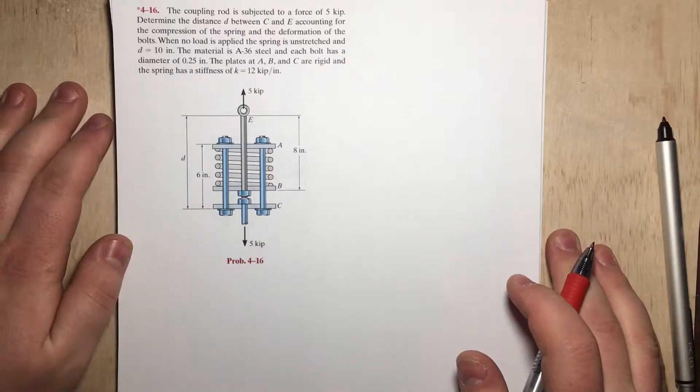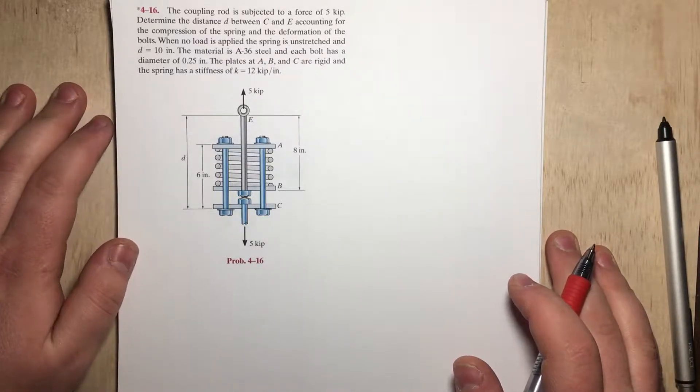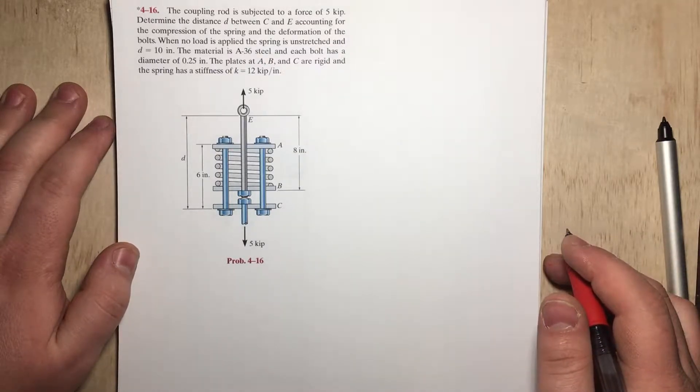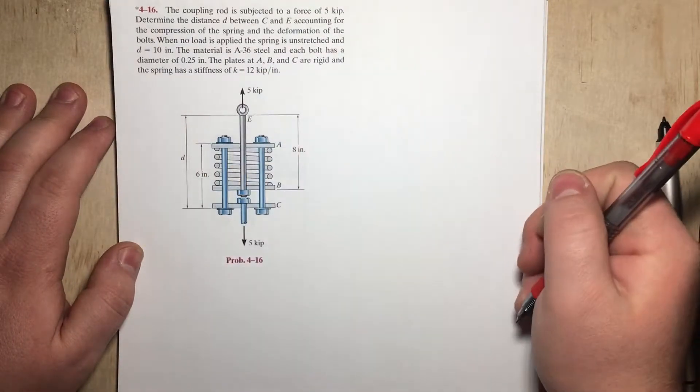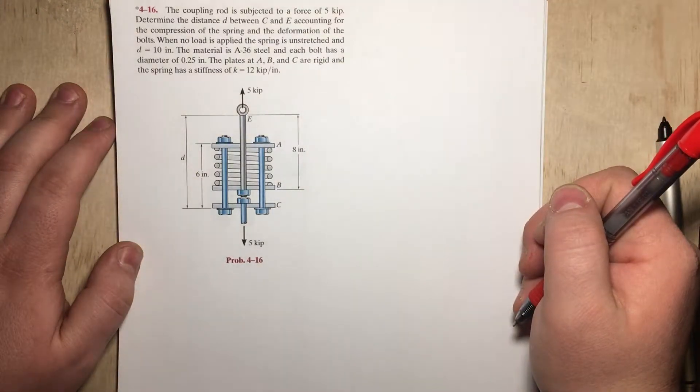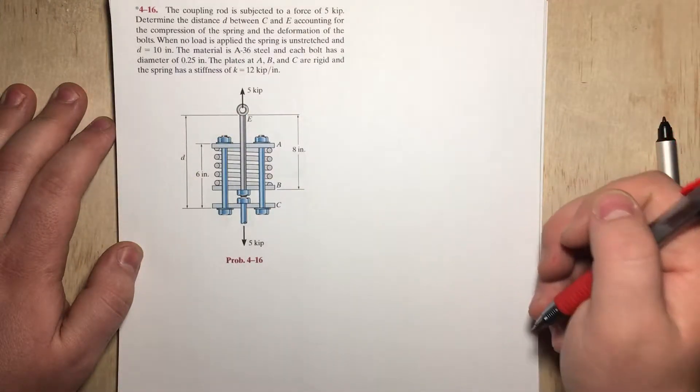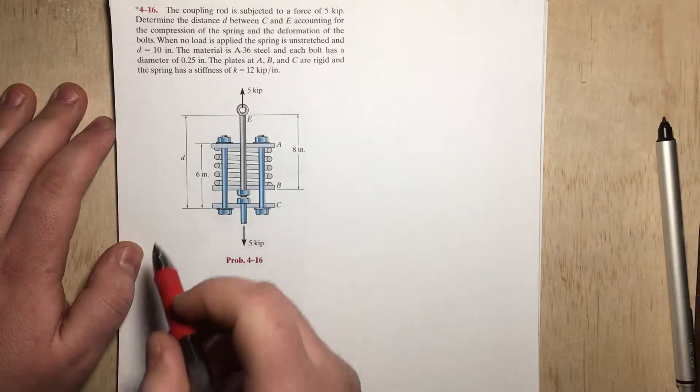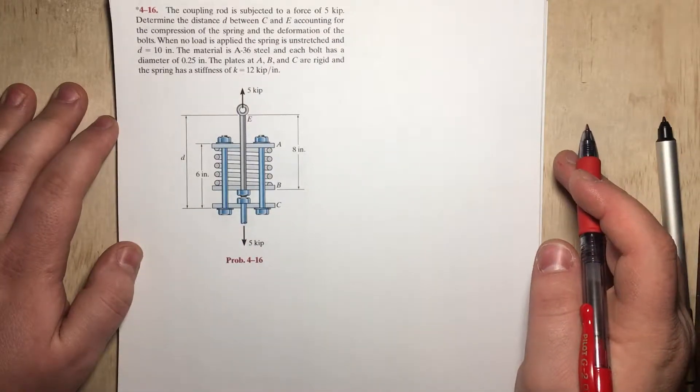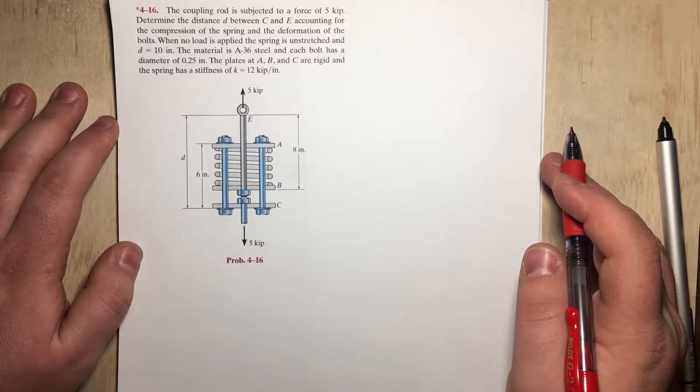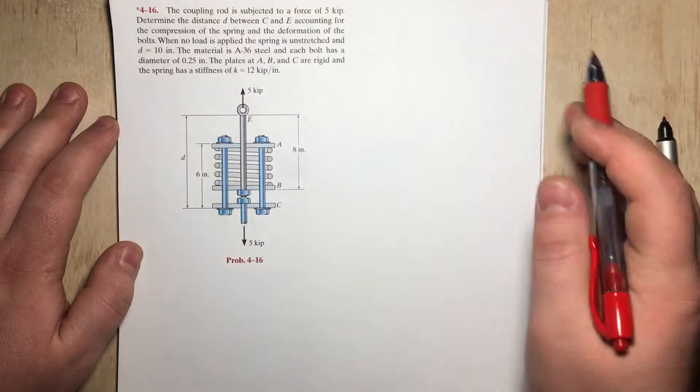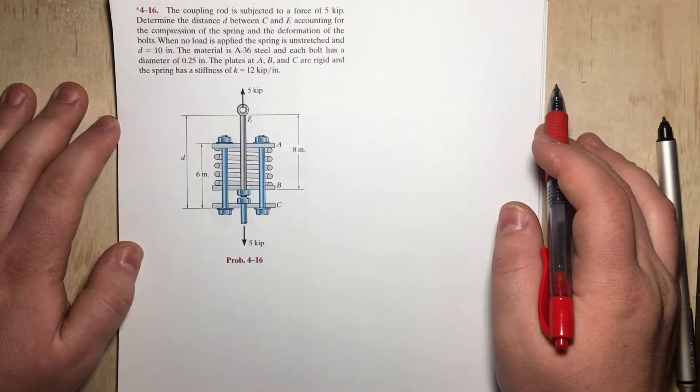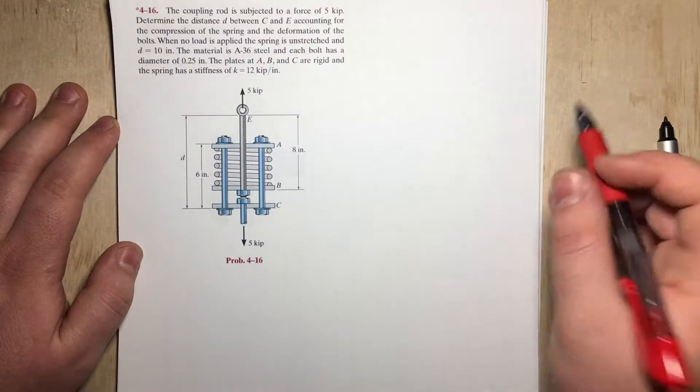Hello everyone, so today I wanted to go over a deformation type of problem. In particular, this problem says the coupling rod is subject to a force of 5 kip. Determine the distance d, which is this one right here, between c and e, accounting for the compression of the spring and deformation of the bolts. When no load is applied, the spring is unstretched, and distance d is 10 inches. The material is A36 steel, and each bolt has a diameter of 0.25 inches. The plates at A and B, and also C, are rigid, and the spring has a stiffness of k equals 12 kip per inch.